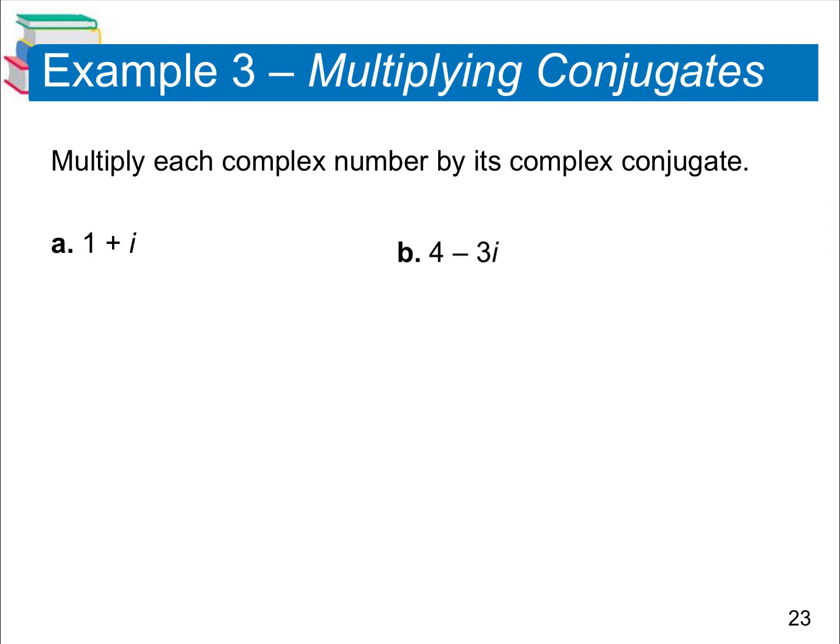If we look at the first set of examples, we're multiplying each complex number by its complex conjugate. We're going to find the conjugate first and then multiply. To find the conjugate, you're going to keep the first and the last term and just change the sign that's between them.